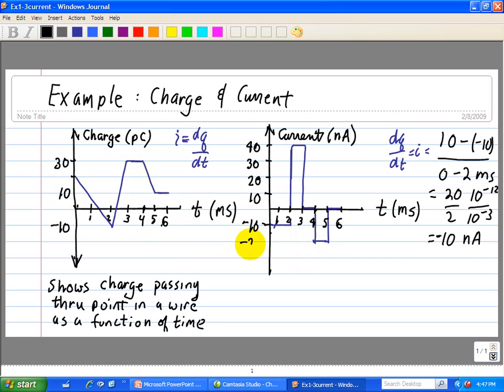So in this here, from 4 to 5 milliseconds is minus 20 nanoamps. And then from 5 to 6 milliseconds, we again have zero slope, so that's why we have zero current here.